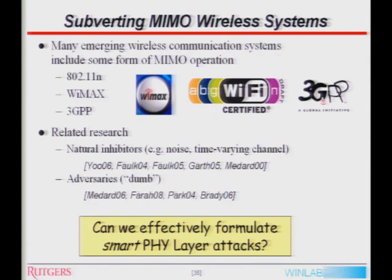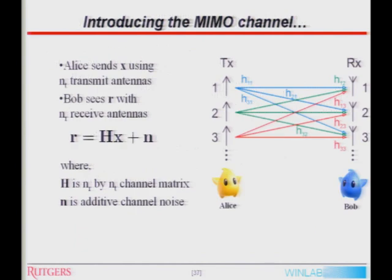Most currently emerging systems have some form of multiple input, multiple output operation — this includes 802.11n, WiMAX, 3GPP, and beyond. A lot of existing research has only included natural indicators such as noise and time-varying channels. Work that has looked at adversaries has really considered them quasi-dumb — not necessarily protocol-smart, not aware of or trying to take advantage of specific protocol exploits. As you look more and more into the protocol, you can come up with more and more dangerous attacks. The question here was: can we effectively formulate smart physical layer attacks against MIMO systems?